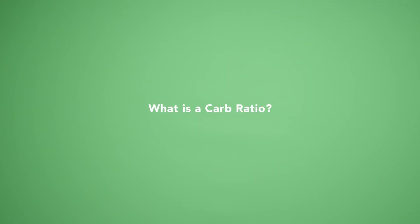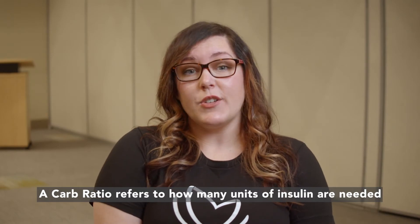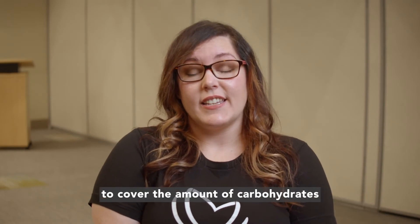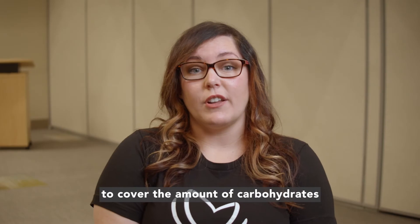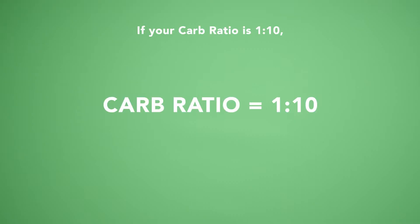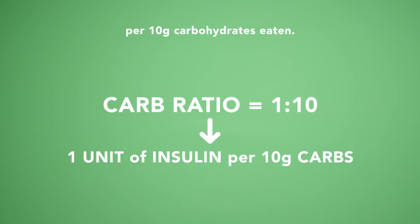What is a carb ratio? A carb ratio refers to how many units of insulin are needed to cover the amount of carbohydrates that are eaten in a meal. If your carb ratio is 1 to 10, that means that one unit of insulin is given per 10 grams of carbohydrates eaten.